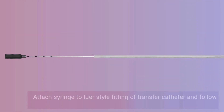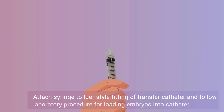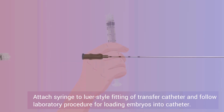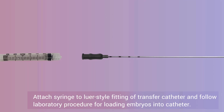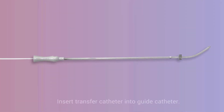Attach a syringe to the luer-style fitting of the transfer catheter and follow laboratory procedure for loading embryos into the catheter. Then insert the transfer catheter into the guide catheter.